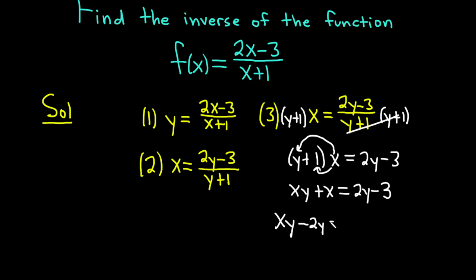And then subtracting x, that's going to give us negative 3 minus x. You have xy minus 2y, xy minus 2y. Then you can do minus x, minus x. You have xy minus 2y equals negative 3 minus x, which is negative 3 minus x.